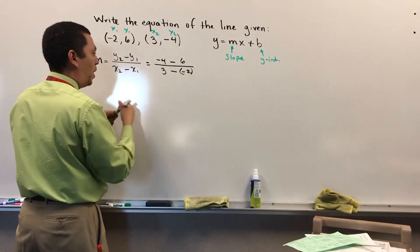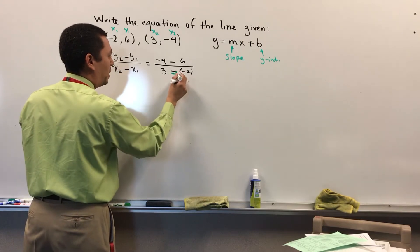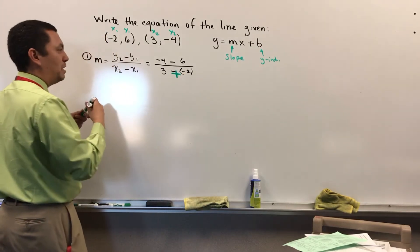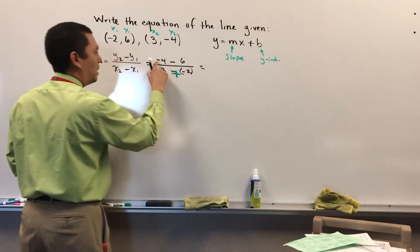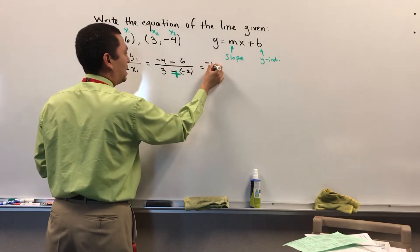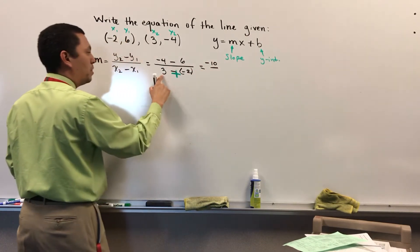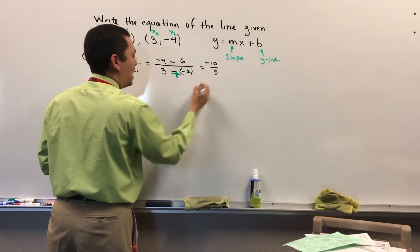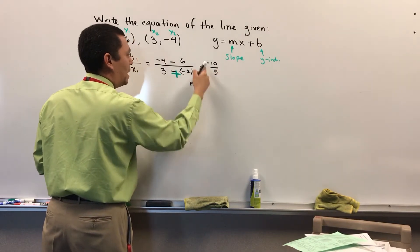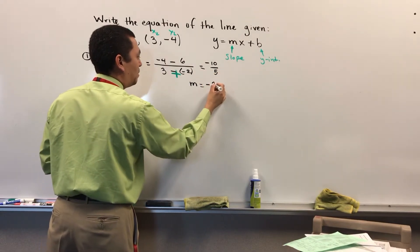Negative and negative is positive, so I'm going to mark this on green here. I have negative 4 minus 6 is negative 10 over 3 plus 2 is 5. And if I simplify, negative 10 over 5 is negative 2.